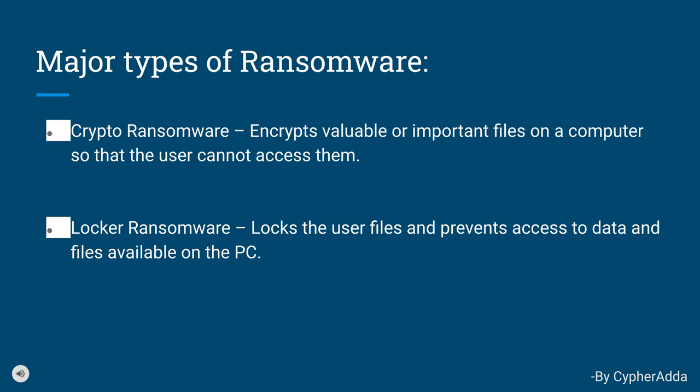What are the major types of ransomware? 1. Crypto ransomware encrypts valuable or important files on a computer so that the user cannot access them. 2. Locker ransomware locks the user files and prevents access to data and files available on the PC.